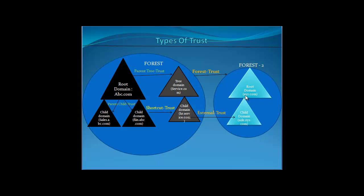If a domain like hr.service.com wants to trust a domain from another forest — such as sales.xyz.com — that is called an external trust. If you want an entire forest to trust another forest, for example Forest 1 trusting Forest 2, that type of trust is called a forest trust. In the next video, we will see how to create these trust relationships and how to create a domain and Active Directory from scratch.